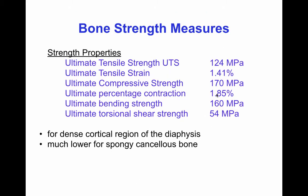Here are some measures of the strength of bone. The ultimate compressive stress is 170 MPa, and the ultimate percentage contraction (negative strain at failure in compression) is about 1.8%. The ultimate bending strength is 160 MPa, and the ultimate torsional shear stress is about 54 MPa.